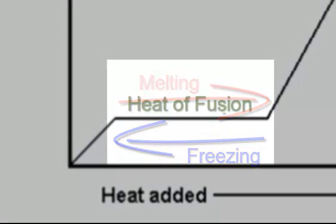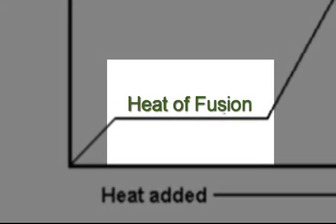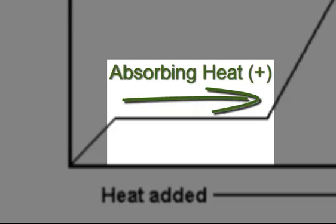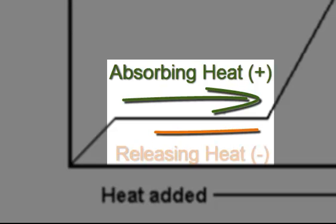This heat is called the heat of fusion, and when we're melting, that is positive heat of fusion. We're actually absorbing heat in order to melt it. And that exact same amount of heat is used to freeze it on the other side, but that would be negative heat, which means it would actually release heat.